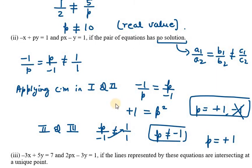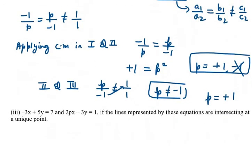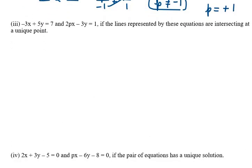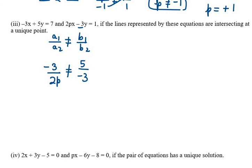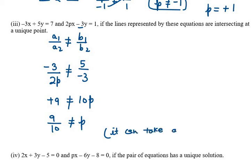Let's move to part 3. It says minus 3x plus 5y equals 7 and 2px minus 3y equals 1, where the lines intersect at a unique point. For a unique solution the condition is a1 over a2 is not equal to b1 over b2. So minus 3 over 2p is not equal to 5 over minus 3. Using cross multiplication we get 9 plus 9 not equal to 10p, giving P not equal to 9 over 10 — it can take any real value apart from 9 over 10.